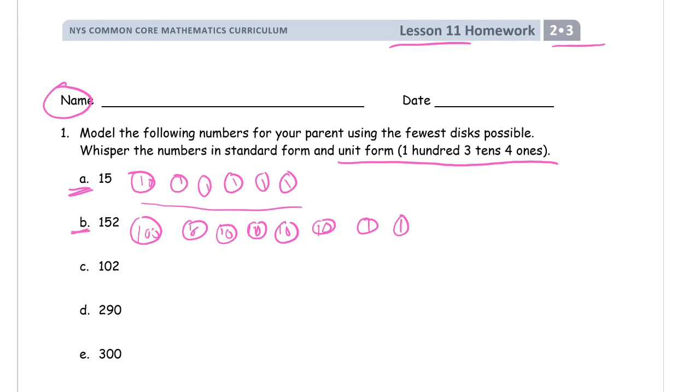For B, in standard form, this is 152. It's just saying the number. That's standard form. In unit form, it's 1 hundred, 5 tens, 2 ones. That's the difference in how you say it in standard form and unit form.